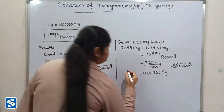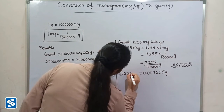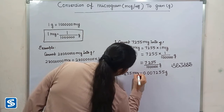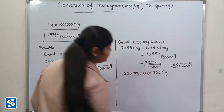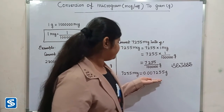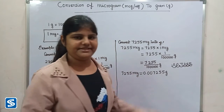So seven thousand two hundred and fifty-five micrograms is equal to zero point zero zero seven two five five grams.